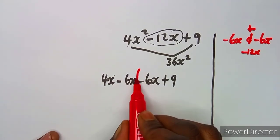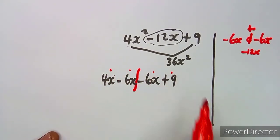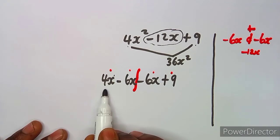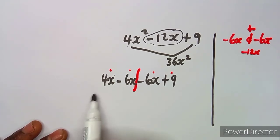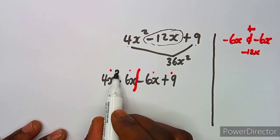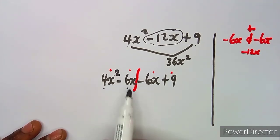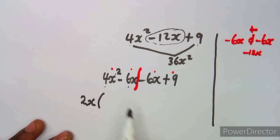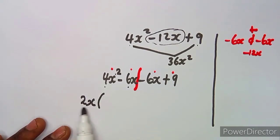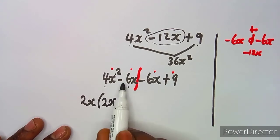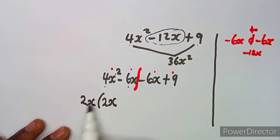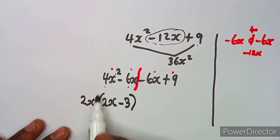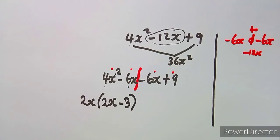So we now have 4x squared minus 6x minus 6x plus 9. As you can see we now have four terms, so we group into two pairs and factor out what is common. For the first two terms, 2x is common. So we factor out 2x: 4x squared divided by 2x gives 2x, and minus 6x divided by 2x gives minus 3, leaving us with 2x(2x minus 3).